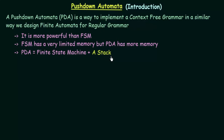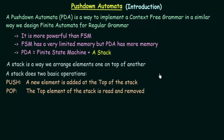Let us see what a stack is and what are the main operations it can perform. If you have studied data structures, you may already know what a stack is. A stack is a way we arrange elements one on top of another. A stack has two basic operations: the Push operation, where a new element is added at the top of the stack, and the Pop operation, where the top-most element of the stack is read and removed.